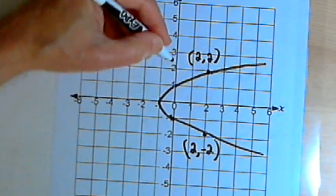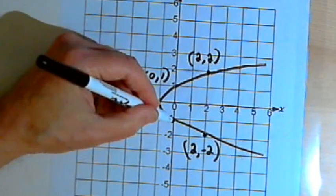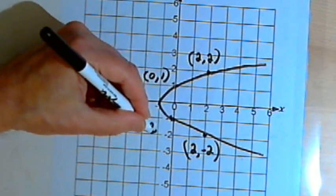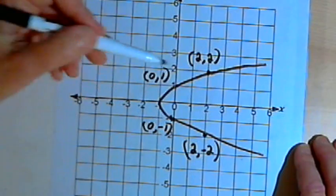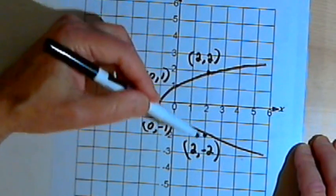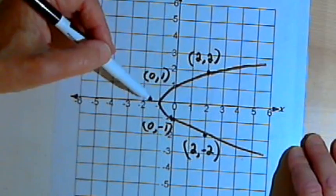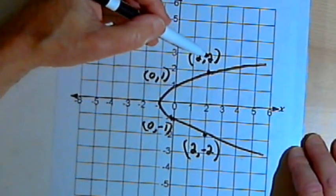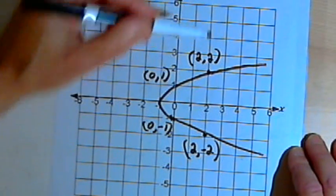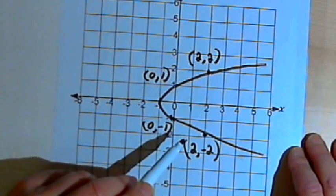Over here I have a point — if I change the y-coordinate so it's negative, I get another point. So once again, if you can fold it along the x-axis and both sides of the graph match up, then this is symmetrical with respect to the x-axis. Another test would be if you can take a point on the graph, change the sign of its y-coordinate, and find that that's also a point on the graph — if you can do that for every point on the graph, then it's symmetrical with respect to the x-axis.